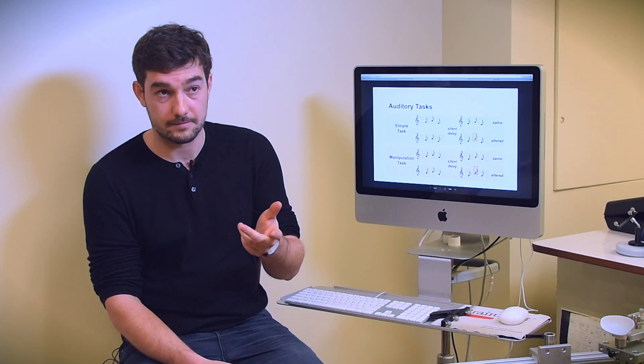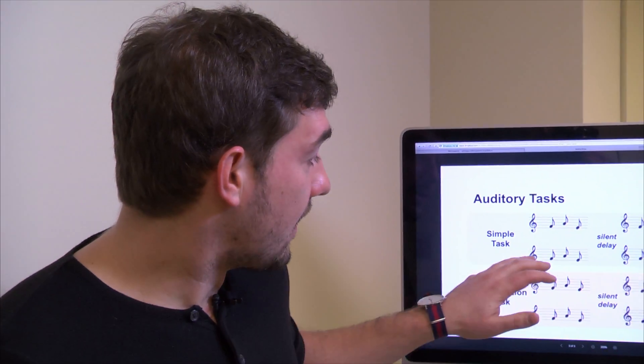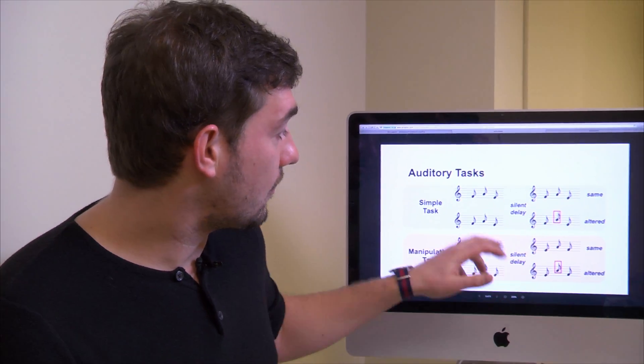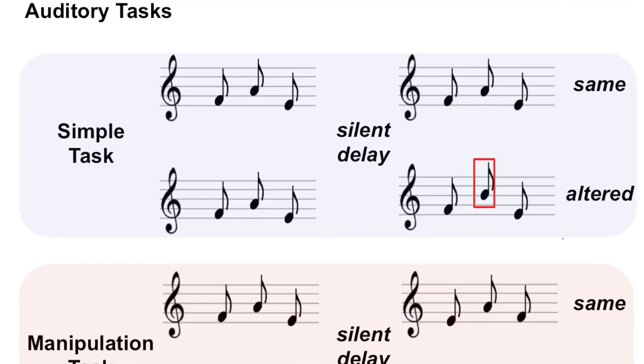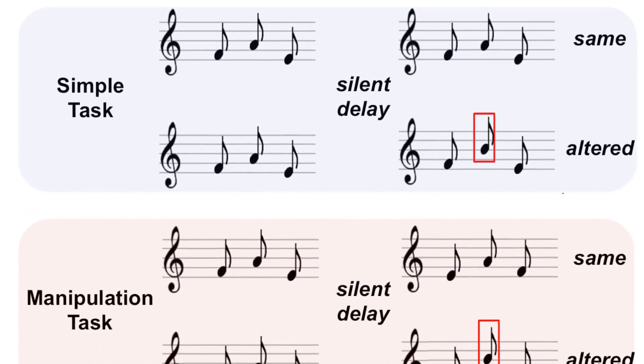To define the network of interest, we used two different tasks. I can show you here. One is a simple task where participants listen to two melodies—a first melody, a silence, and a second melody—and they have to say if the melodies are the same or different.